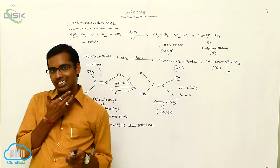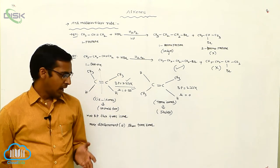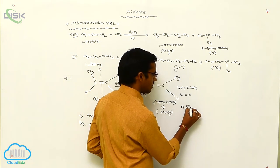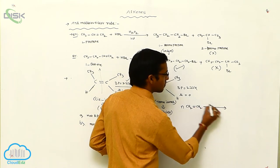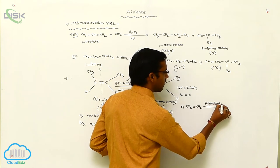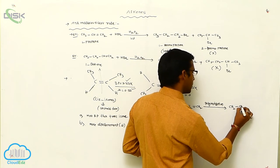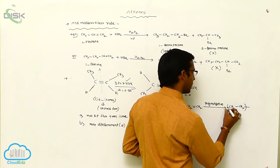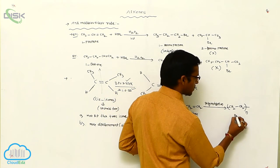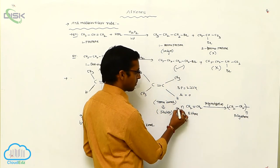Alkenes generally exhibit polymerization. Polymerization involves n number of moles of monomers. For example, ethylene — CH2 double bond CH2 — undergoes polymerization to produce polyethene, written as (CH2–CH2)n. N number of ethylene units undergo polymerization to give polyethene.